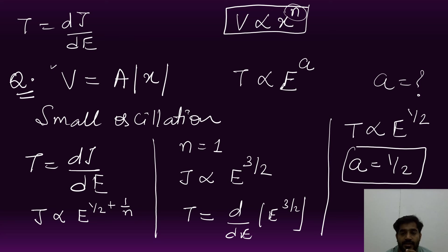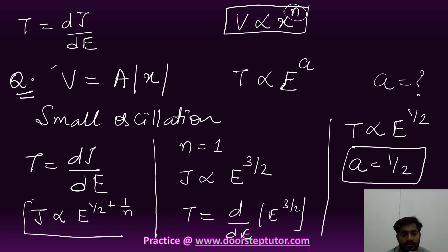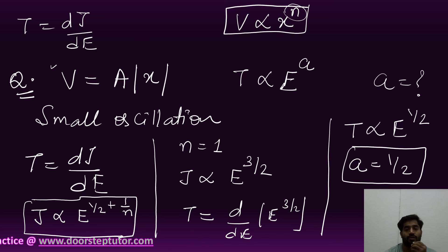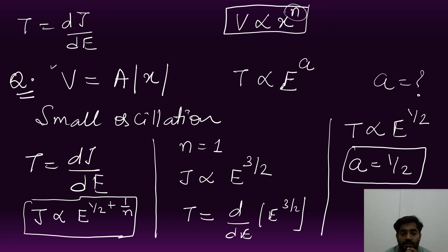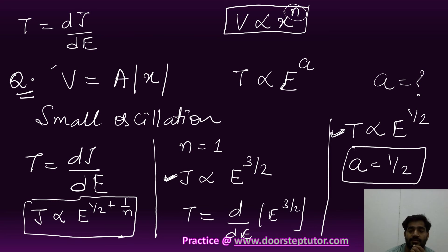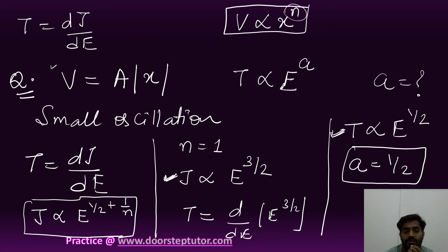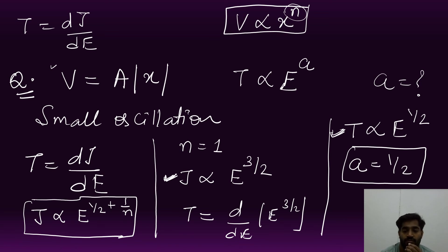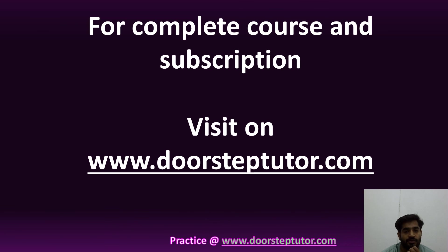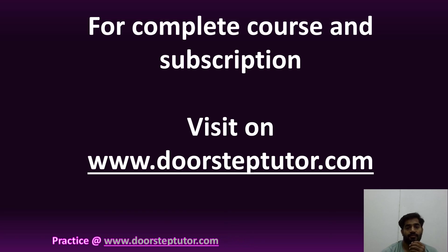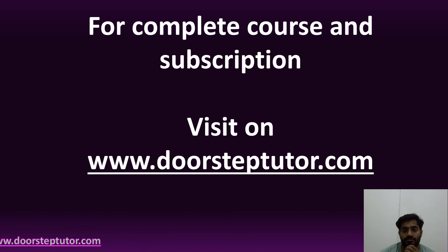This is easily solved using the simple trick of action-angle variables — just remember this formula. Many questions can be asked: what is the relation between the action-angle variable and E, what is the time period, or what is the frequency. If they ask for frequency, just take the reciprocal. Thank you — for a complete course, please subscribe and visit doorsteptutor.com.